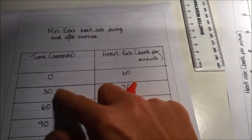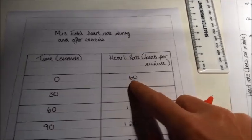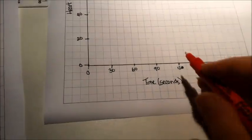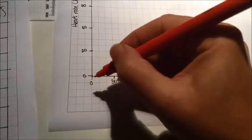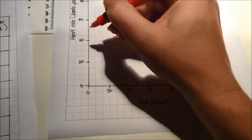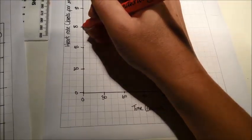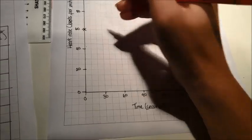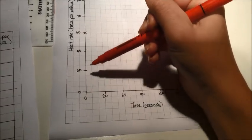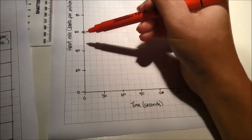So let's go back to our first bit of data. When we had zero seconds, my heart rate was 60 beats per minute. So we have to find zero on the seconds, which is here, and then we have to go all the way up to 60. And when we get there, we put a cross. Let's just double-check: zero seconds, 60 beats per minute. Brilliant.